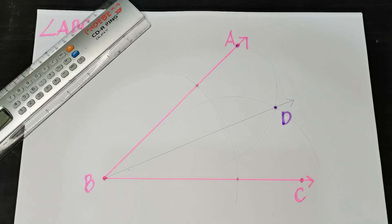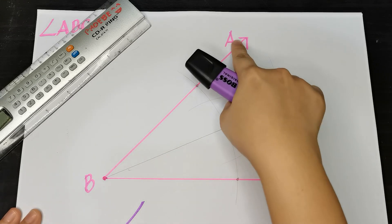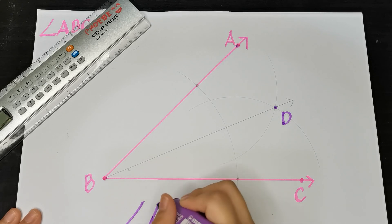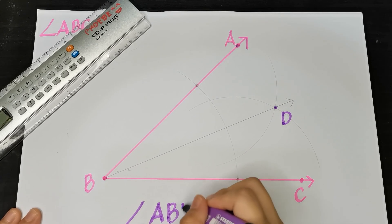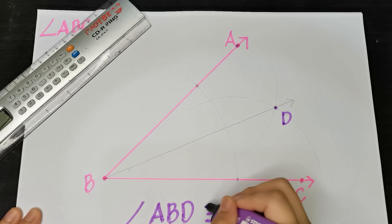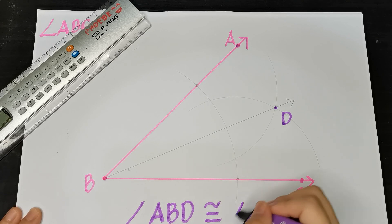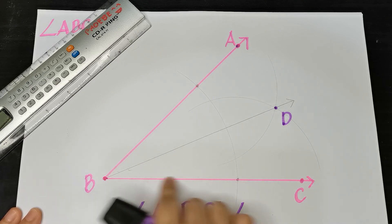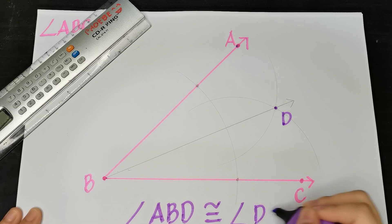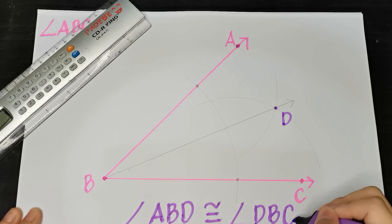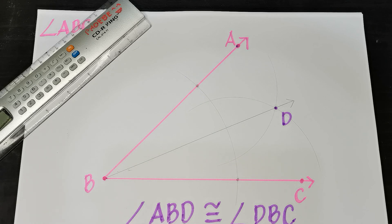Now we can clearly see that this ray is an angle bisector of angle ABC. Let me name this point as point D. We can now say that angle ABD is congruent to angle DBC. You now have two new angles of equal measure, each being half of the original given angle.